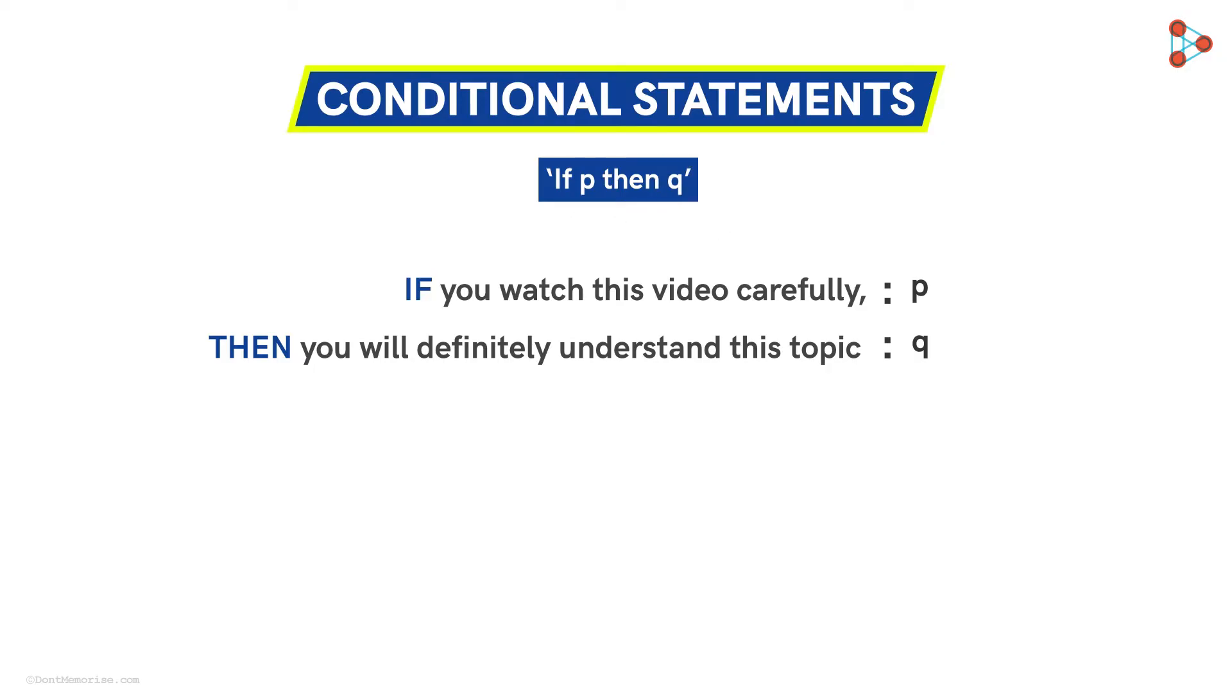Now I want you to be a little more attentive here. In this statement, if P occurs, then what will be its implication? The implication of occurrence of P would be the occurrence of Q. So can we say that Q is nothing but the implication of P? That is, the occurrence of P implies the occurrence of Q. So we can write this as P implies Q.